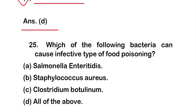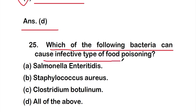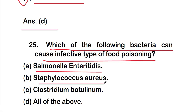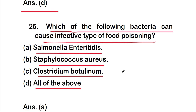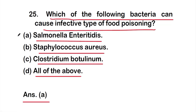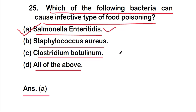Question 25: Which of the following bacteria can cause infective type of food poisoning? Option A: Salmonella enteritidis, option B: Staphylococcus aureus, option C: Clostridium botulinum, or option D: all of the above. The right answer is option A, Salmonella enteritidis, which is the bacterium responsible for infective type of food poisoning.